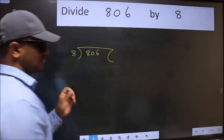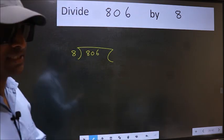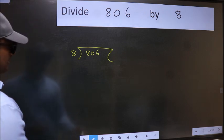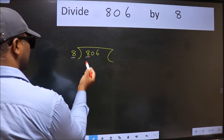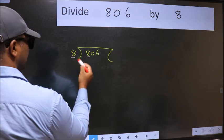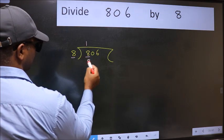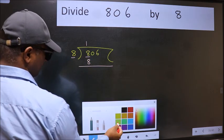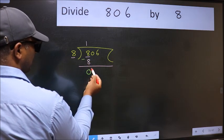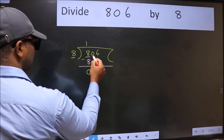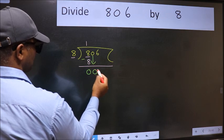This is your step 1. Here we have 8 and here 8. When do we get 8 in the 8 table? 8 once is 8. Now we should subtract. We get 0. After this, bring down the beside number, so 0 down.